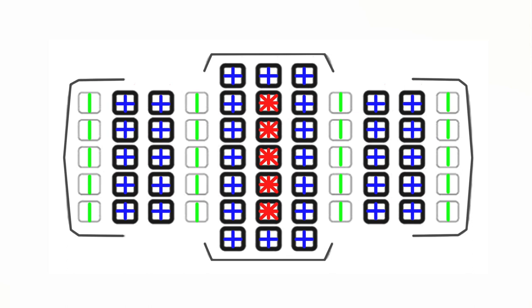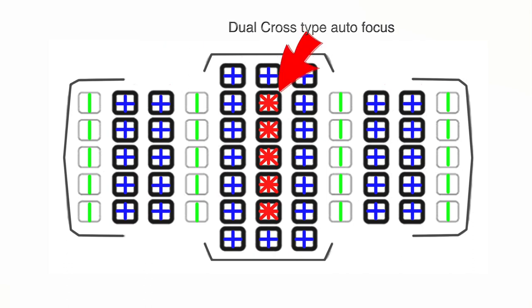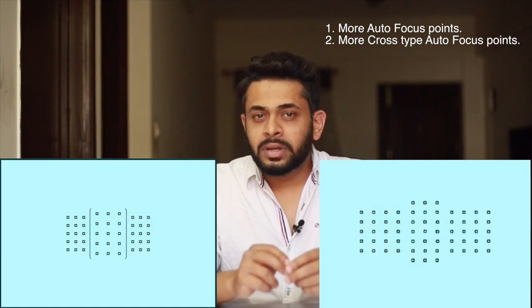Horizontal and vertical autofocus points are important to have, but they are not as fast and efficient as cross-type autofocus points. High-end DSLRs also have dual cross-type autofocus points, which are obviously even more efficient than regular cross-type autofocus points. From this we can derive that while more autofocus points are important, we also need to consider how many of those are cross-type autofocus points.